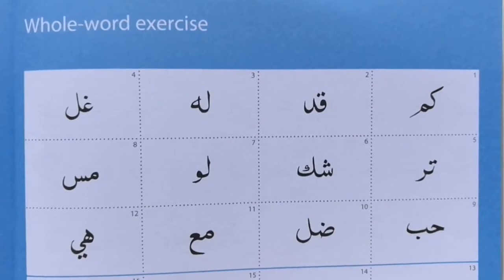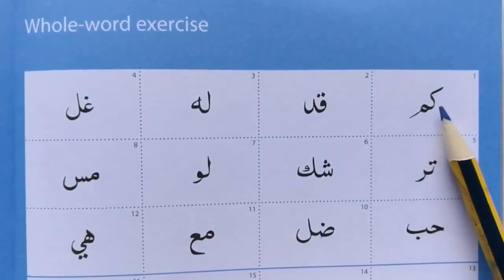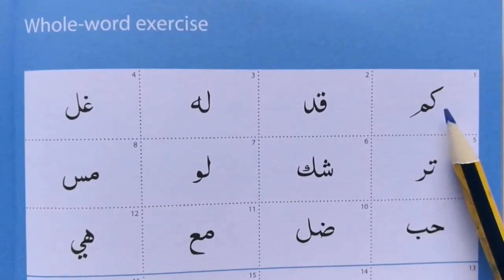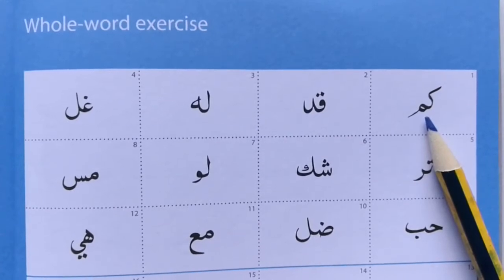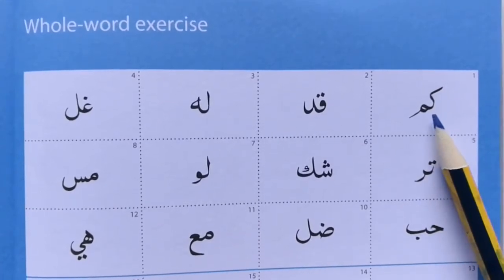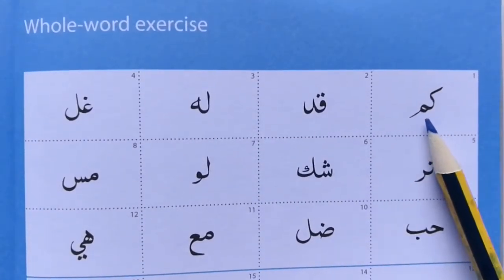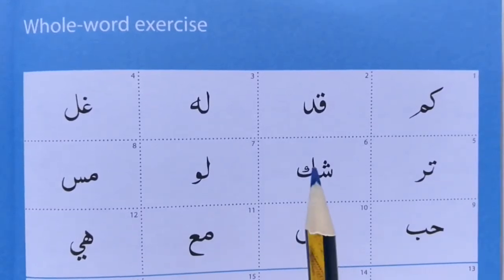Okay, so the first one — have a little try yourself. The first letter is a Kaf and the second is a Meem. From the identity map we did them separately, and here they're together: Kaf, Meem. Second one.